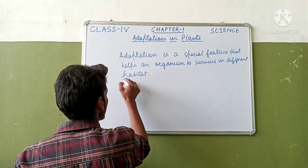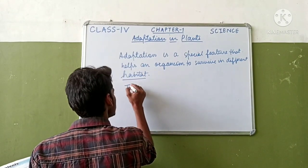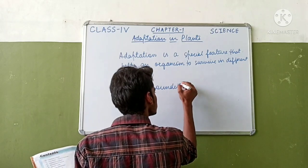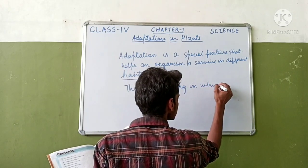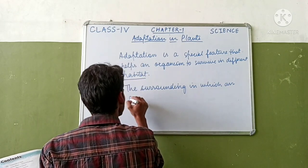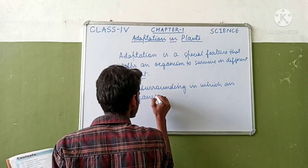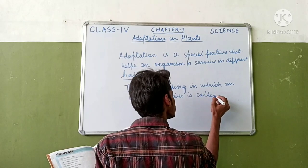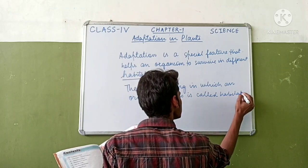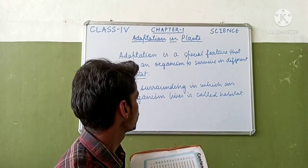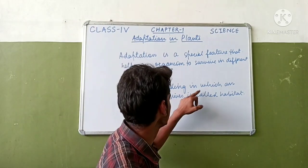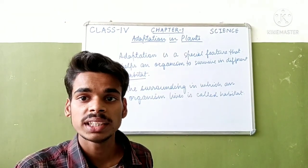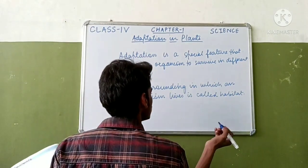The question arises: what is habitat? The surrounding in which an organism lives is called habitat. For example, fish lives in water, so water is the habitat of fish.